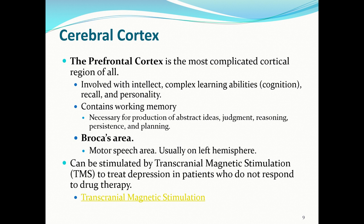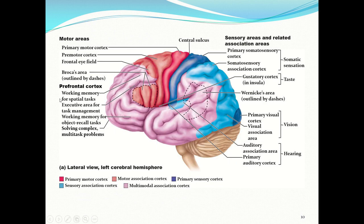The prefrontal cortex can be stimulated by transcranial magnetic stimulation, which can treat depression in patients who do not respond to drug therapy. The prefrontal cortex is shown in a light lavender, with Broca's area outlined in red dashes — it's a motor area, so when you are ready to speak, Broca's area sends that sensation to your tongue muscles. The prefrontal cortex handles working memory for spatial tasks, executive task management, object recall, and solving complex multi-task problems through those association fibers.